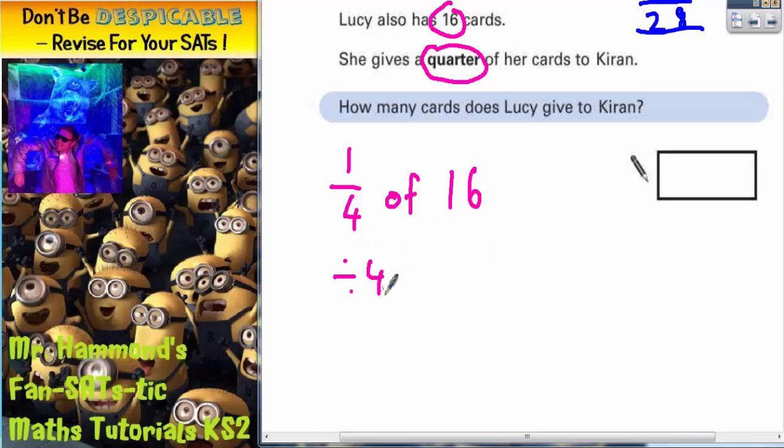And to divide any number by 4, you half it and then half it again. So half of 16 is 8, and half this again is 4. So a quarter of 16 is 4 cards. So how many cards does Lucy give to Kieran? The answer is 4.